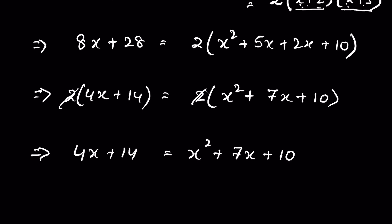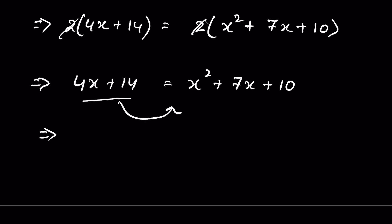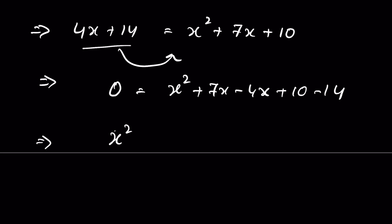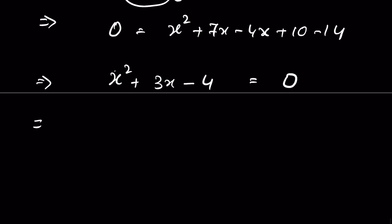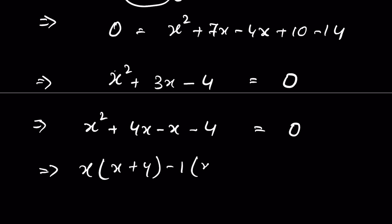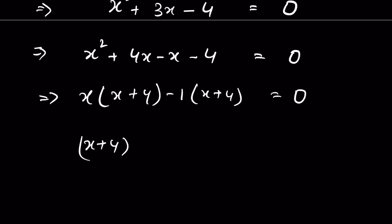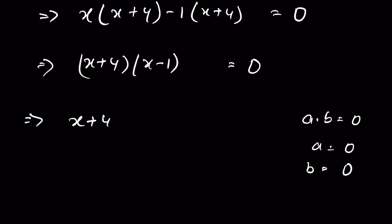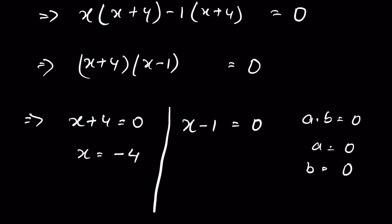Sending terms to the right-hand side: 0 = x²+7x−4x+10−14, which simplifies to x²+3x−4 = 0. This is a quadratic equation we can factorize: x²+4x−x−4 = 0, giving x(x+4)−1(x+4) = 0, so (x+4)(x−1) = 0. When a×b = 0, either a = 0 or b = 0, so x+4 = 0 gives x = −4, and x−1 = 0 gives x = 1.